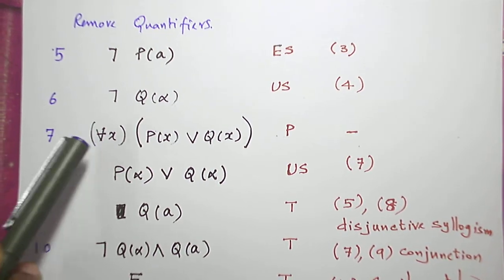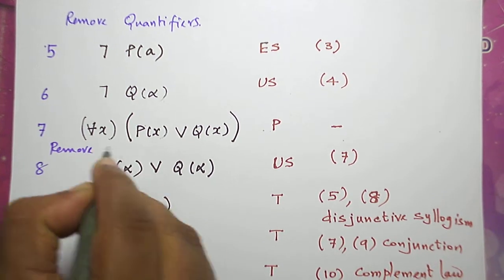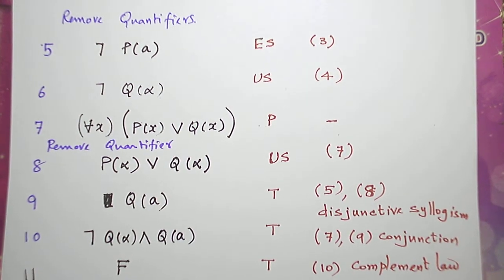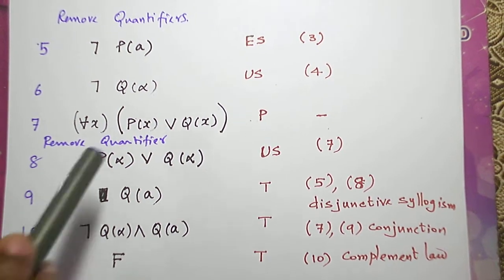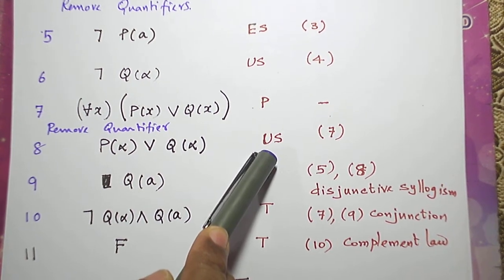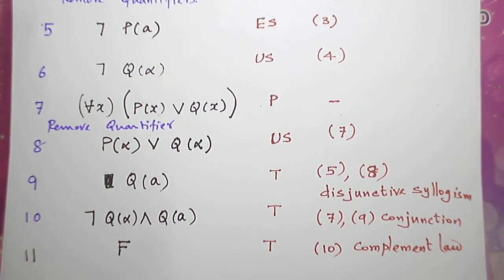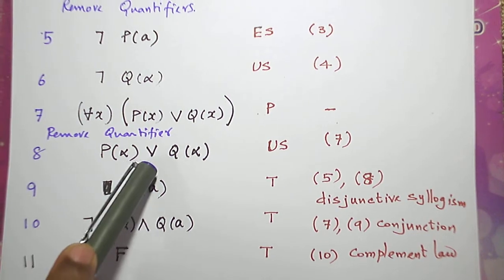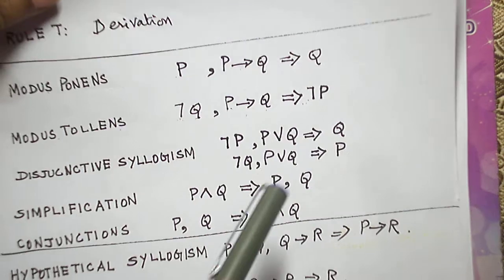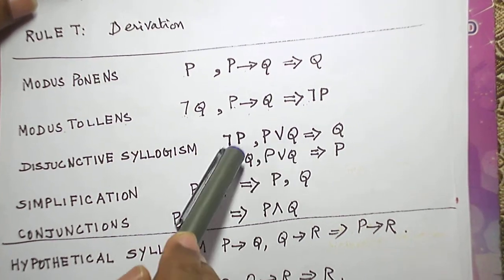From this, let me remove the quantifier. Removing the quantifier can be done using rule US or rule ES. Here we have a for all x quantifier, so let me remove it using rule US with a Greek letter. Now let me combine step five and step eight. We are having an or connective, and when we have an or connective we shall apply disjunctive syllogism.